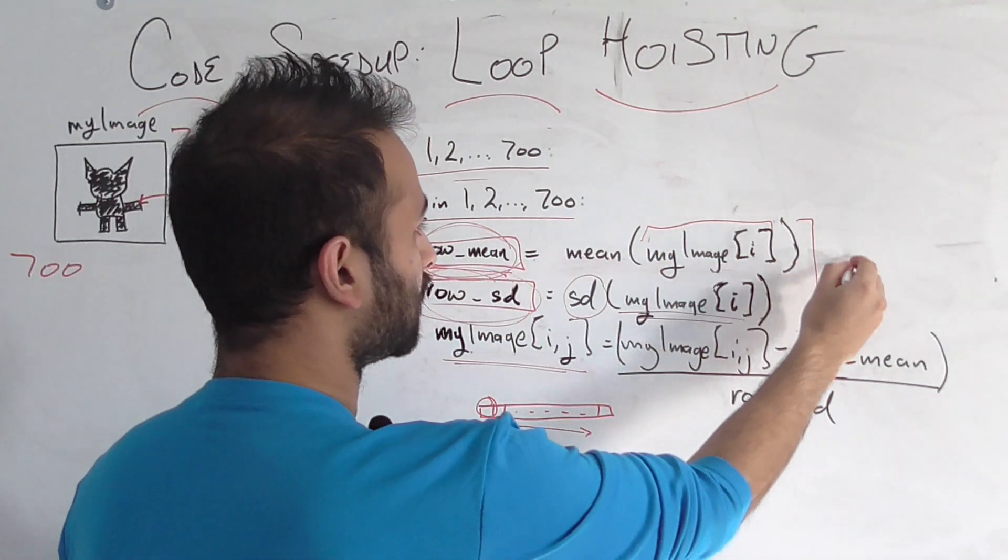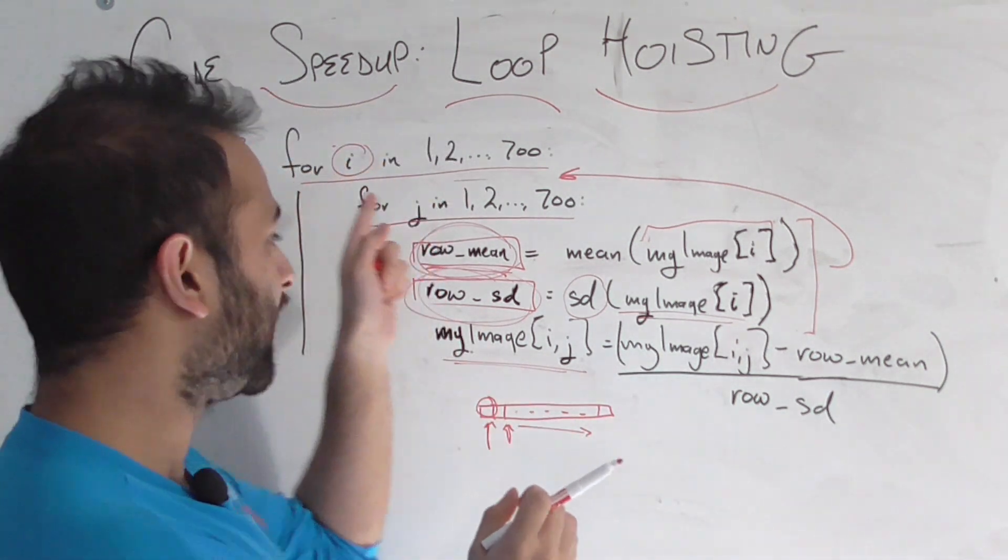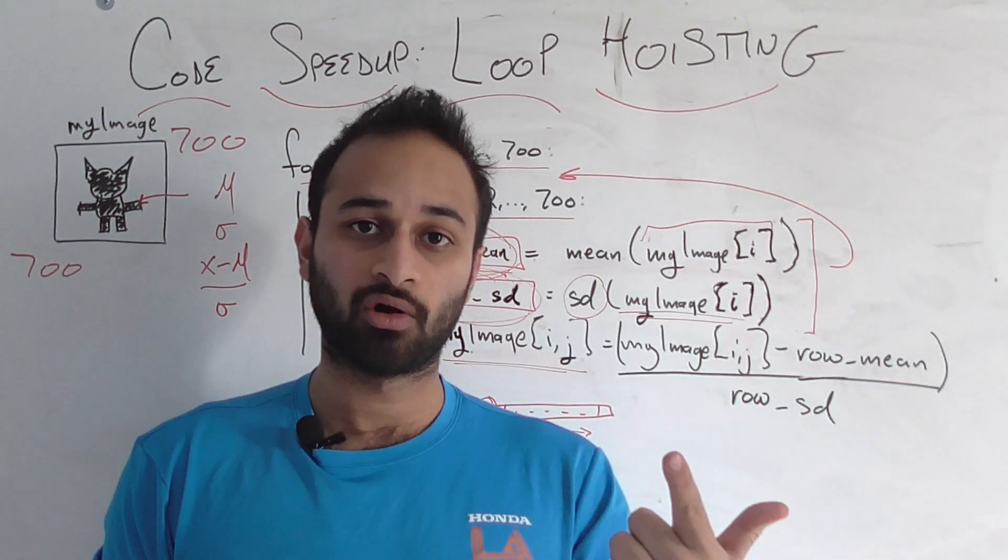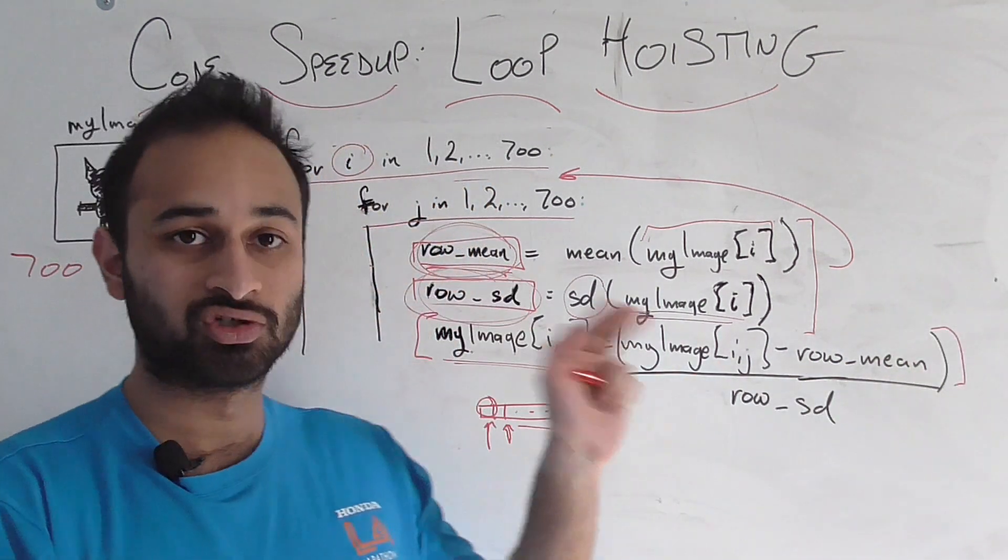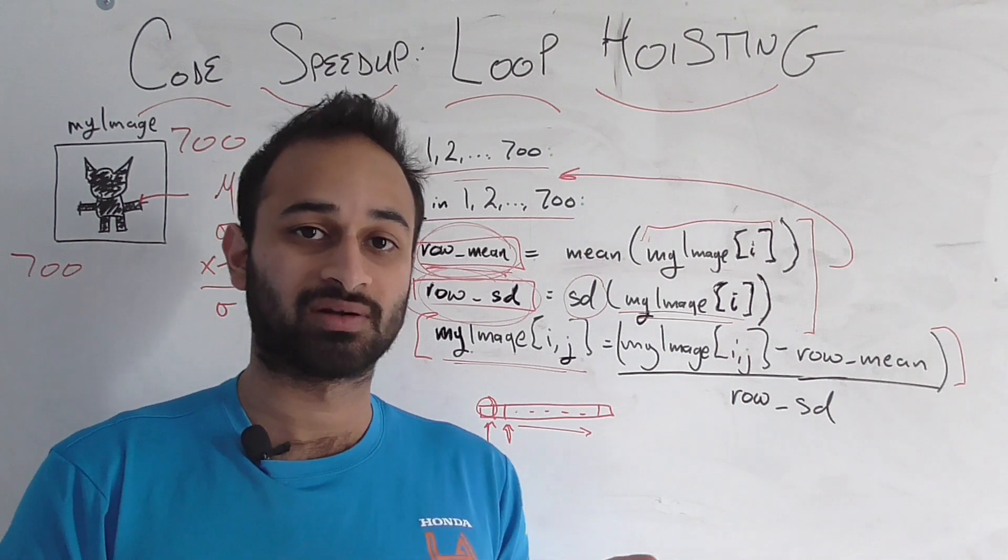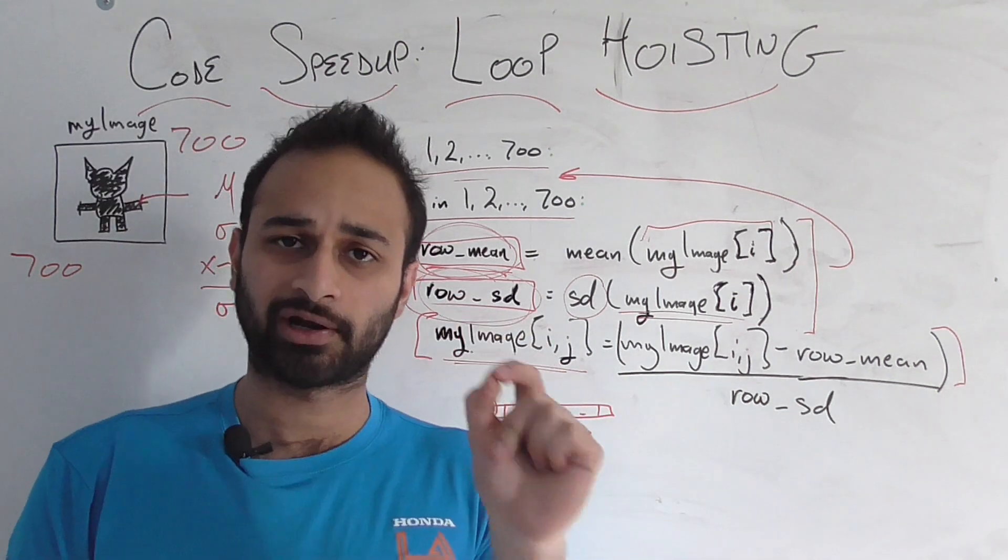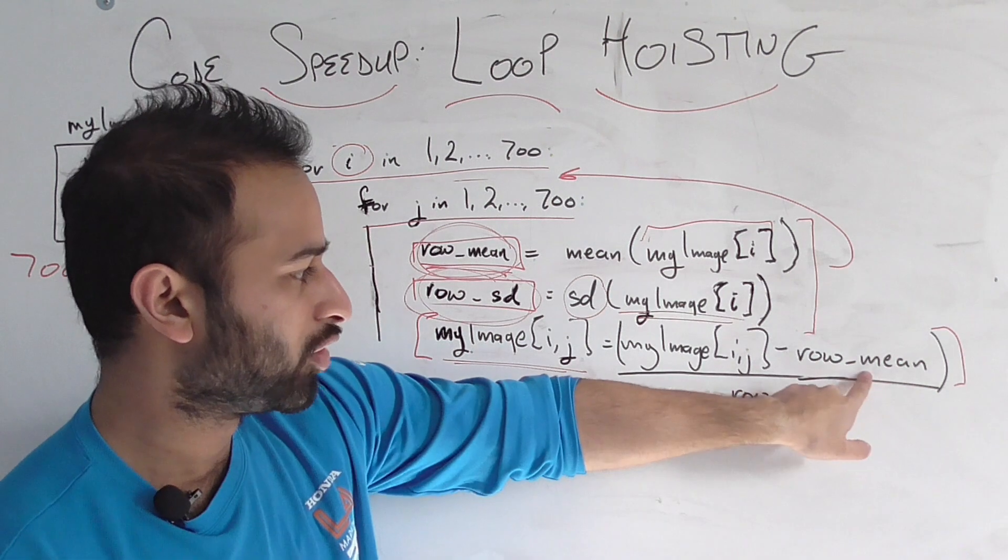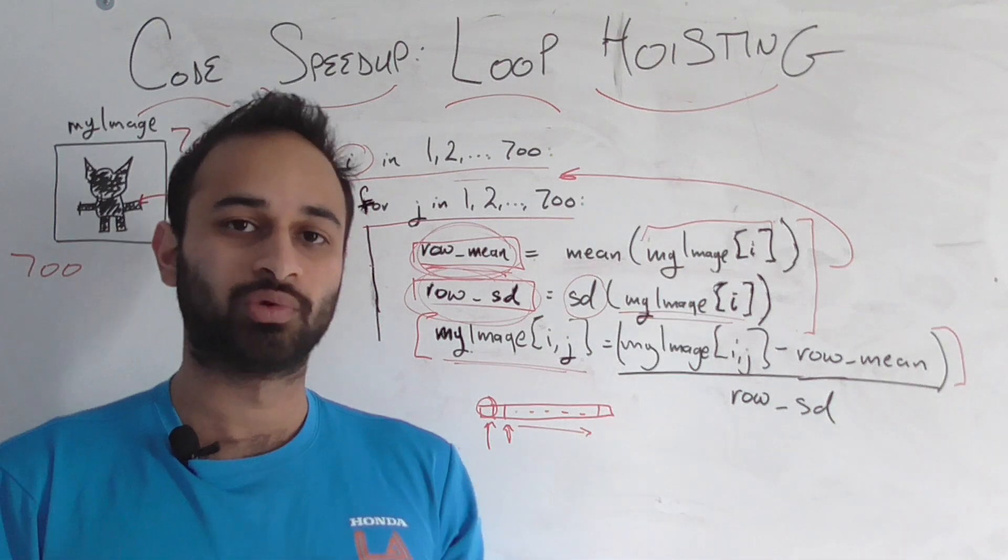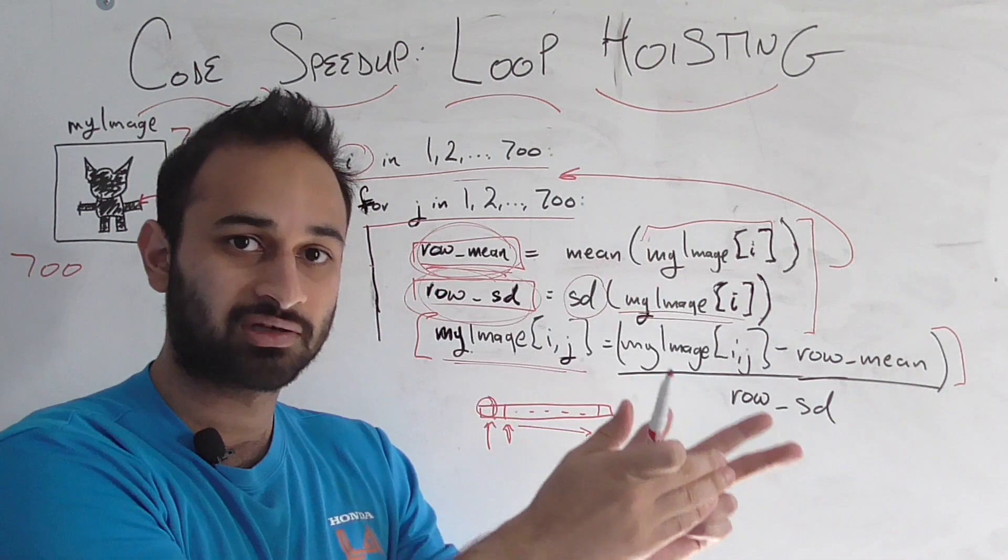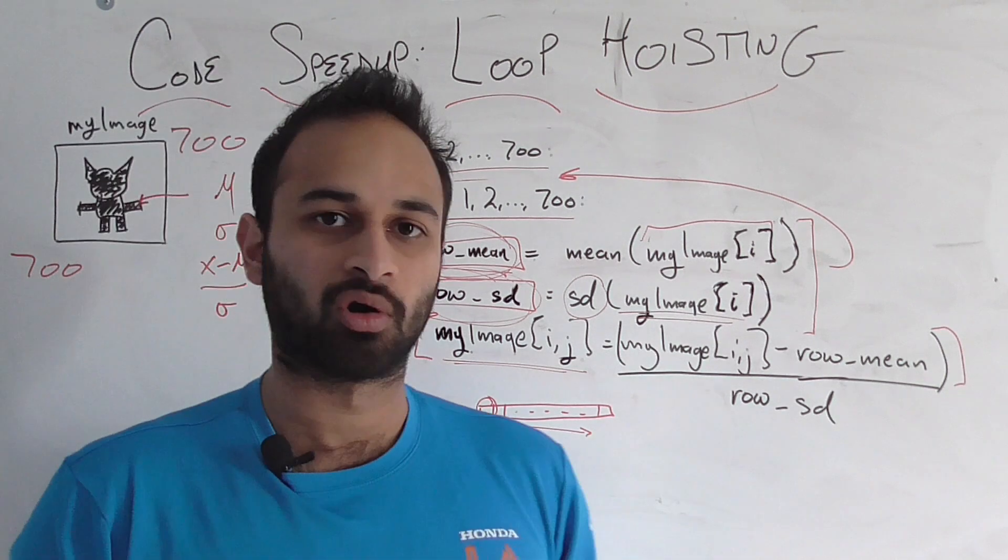So here's where the hoisting part comes in. We're going to take these two statements here and hoist them out to this level of the two for loops. Which means right after we know which row we're in, right after we pick our i, we're going to calculate the mean and standard deviation of that row and use those values inside this part of the for loop, which still is nested two layers deep. And so that solves our efficiency problem because we're not calculating something 700 times anymore. We're just calculating it one time per row. And it also solves our correctness issue. Because now when we do this transformation, we're using the row mean and row standard deviation that were calculated at the very beginning, as soon as we knew which row we're in. So we are not updating these values over time. They're fixed once we know the row and then we use that value over and over and over again.